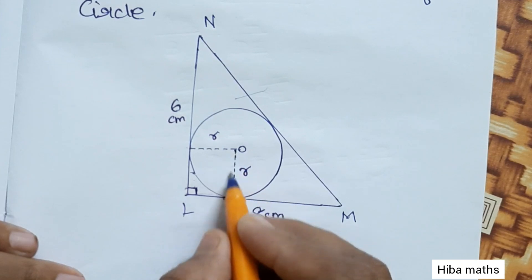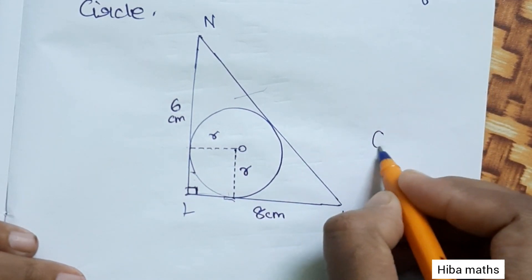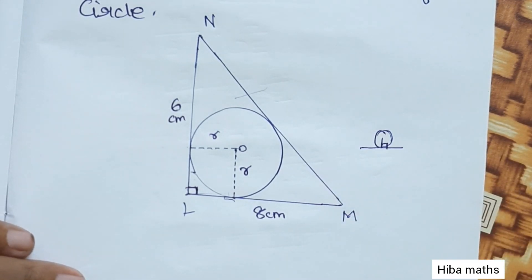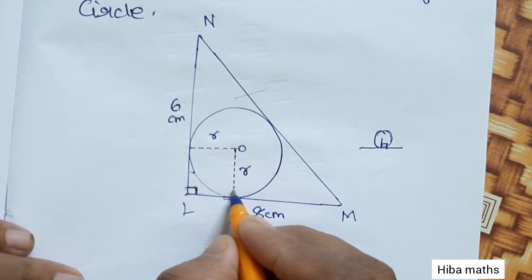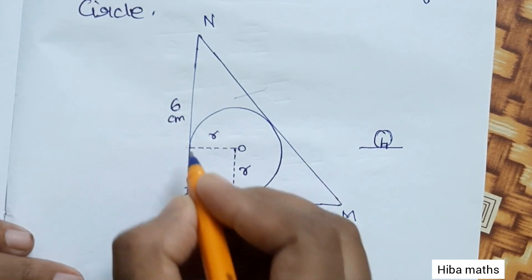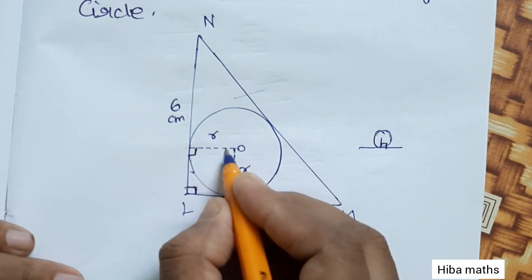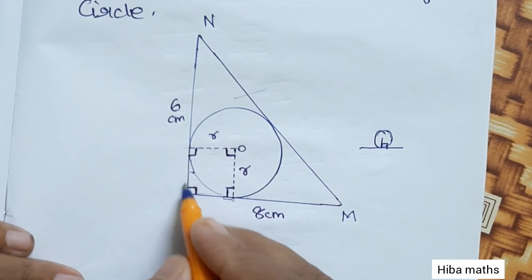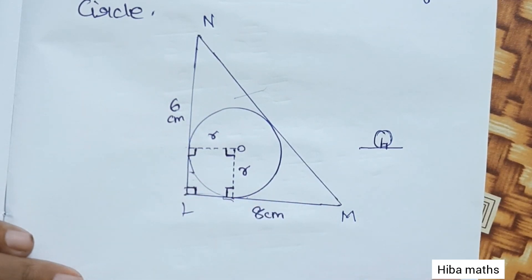First, this line is 90 degrees. If you meet a circle with a tangent, it is 90 degrees. If you touch a circle with a tangent, the angle between the radius and the tangent is 90 degrees.